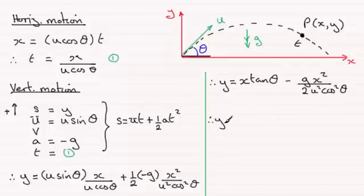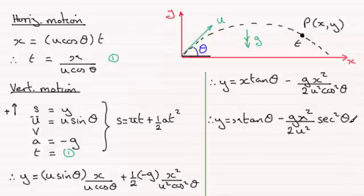What we tend to do with this, though, is take the last term, this one here. And we've got minus gx squared all divided by 2u squared, but here we've got 1 over cos squared theta. 1 over cos squared theta is best known as sec squared theta. So this is quite a popular version for the Cartesian equation, then, of our trajectory.